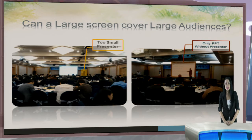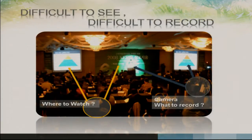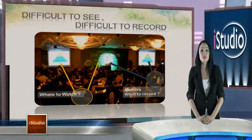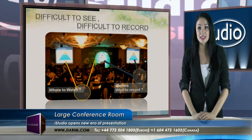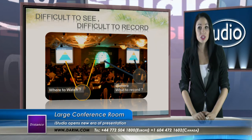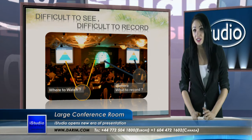If you're sitting in the back, a presenter is too small. Even if you're sitting in the front, you can barely see a presenter because of the lighting coming from the screen. In this type of conference, the audience has to decide which one to look at — a screen or a presenter.